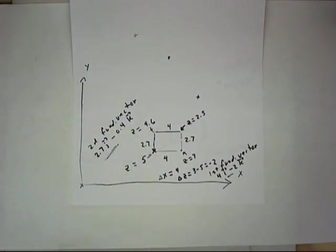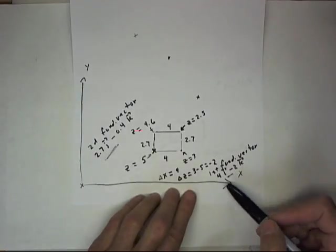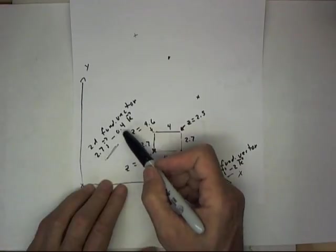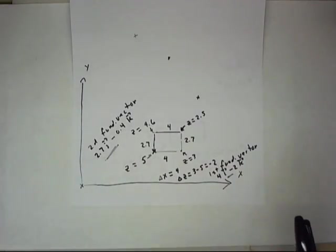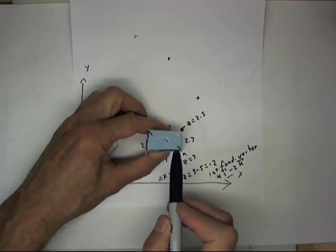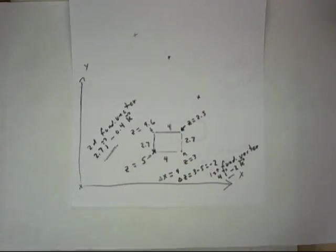Now, what we want to do is, again we've talked about our first fundamental vector, vector 4i minus 2k, second fundamental vector 2j minus 0.4k. Those would be the vectors that run along this edge and this edge of our fundamental object.